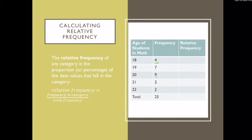In order to calculate the relative frequency, also called the proportion, or you could even convert that to percentage, what we do is we take the frequency in the category over our total frequency. So if I wanted to calculate the relative frequency of 18-year-olds occurring in my math class, I would take four, the frequency of getting an 18-year-old, out of my total, and that would give me 0.16.